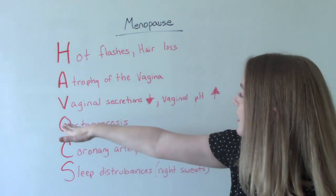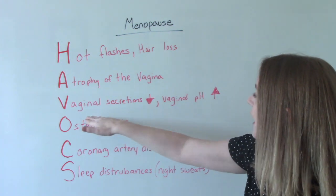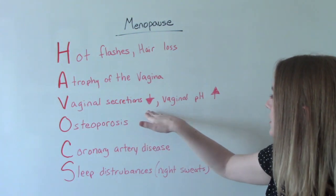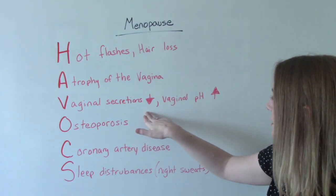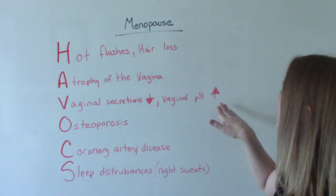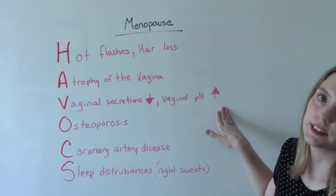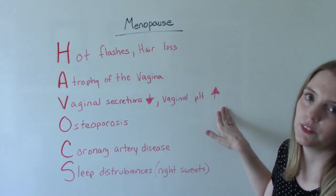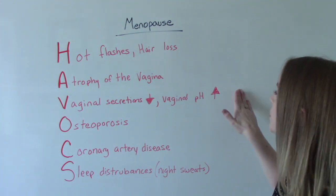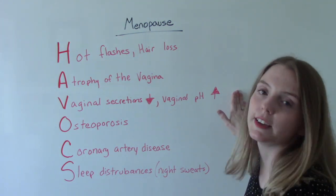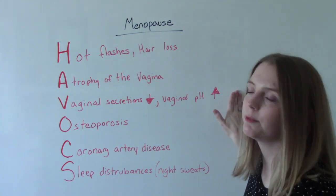V is for vaginal secretions, which have decreased, and vaginal pH increases as a result, making you more susceptible to infections.